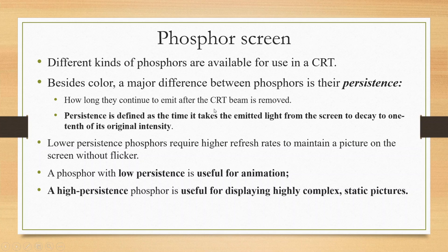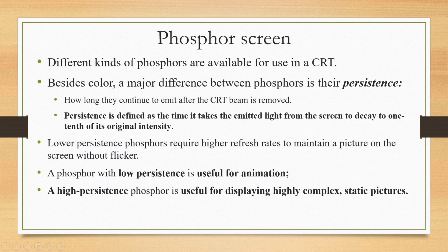Persistence refers to how long the electron-excited phosphor continues to emit light before it fades out. It is defined as the time it takes for the emitted light from the screen to decay to one-tenth of its original intensity.